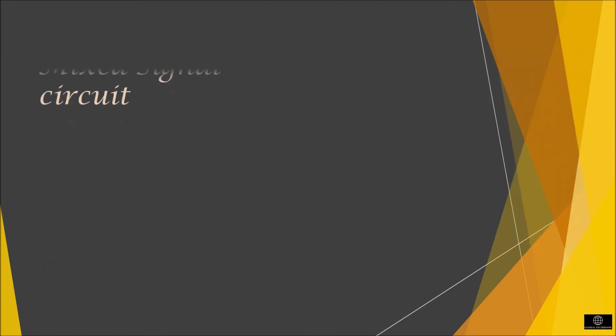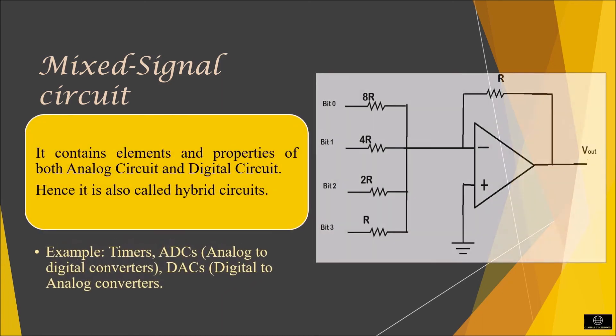The mixed signal circuit contains elements and properties of both analog circuit and digital circuit and hence it is also called as hybrid circuit. Examples include timer, analog to digital converter, digital to analog converters. I hope that you have got a better understanding of this concept.